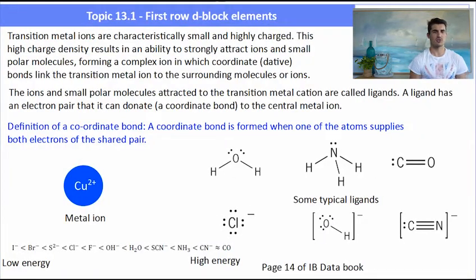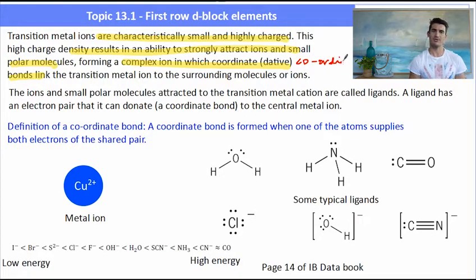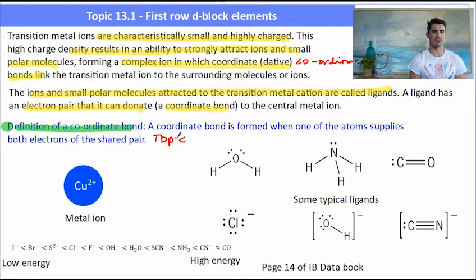So now we need to have a look at how the transition metals interact with a molecule called a ligand. Usually transition metals are small and highly charged in terms of charge density. They have a large charge and a small radius. So they're able to form a complex ion, which is a coordinate bond. A coordinate bond is where a ligand, a small charged ion, is able to donate an electron pair. So the copper ion attracts or the metal ion attracts that electron pair and the ligand donates that electron pair in a coordinate bond. Remember the definition of a coordinate bond is a bond formed when one of the atoms supplies both electrons of the shared pair and that was something that came up in topic 4.